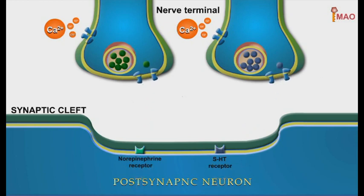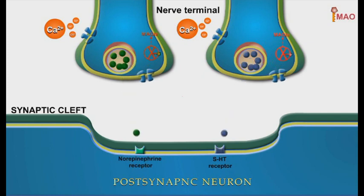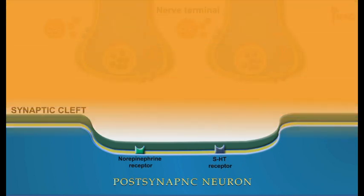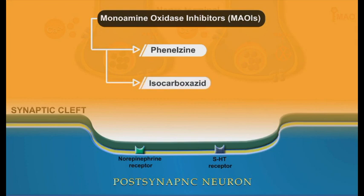Many amines are degraded in the presynaptic neuron bodies by the monoamine oxidase enzyme, known as the MAO enzyme. This enzyme decreases the concentration of different amines inside the storage vesicles. The activity of this enzyme can be effectively inhibited by a group of antidepressant drugs called MAO inhibitors. MAO inhibitors include phenelzine and isocarboxazid.